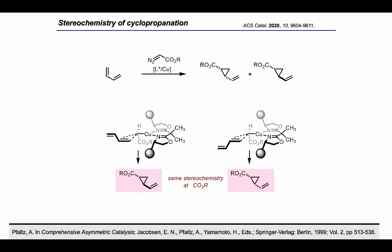Our hypothesis was that extending this model to the case of dienes, the cis- and trans-VCPs obtained by cyclopropanation of the most substituted double bond, as depicted here, would still have the same configuration at the ester-bearing carbon. The vinyl stereocenter, instead, would be of opposite configuration in the two molecules. The same considerations can, of course, be made also for cyclopropanation at the 3,4-double bond.